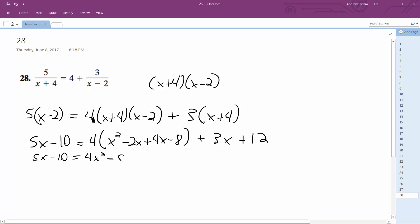equals 4x squared minus 8x plus 16x minus 32 plus 3x plus 12. Let's move 5x